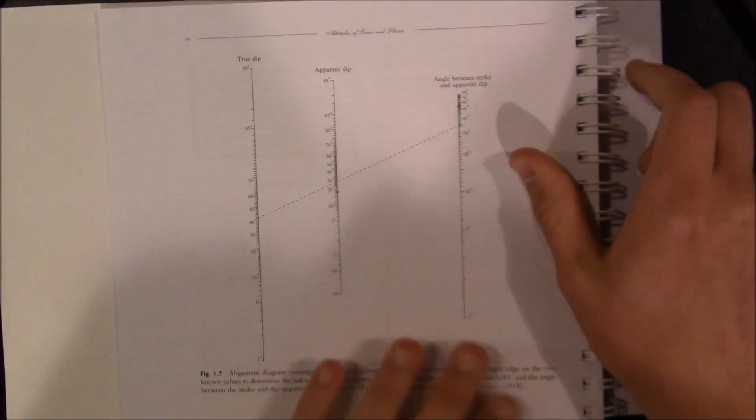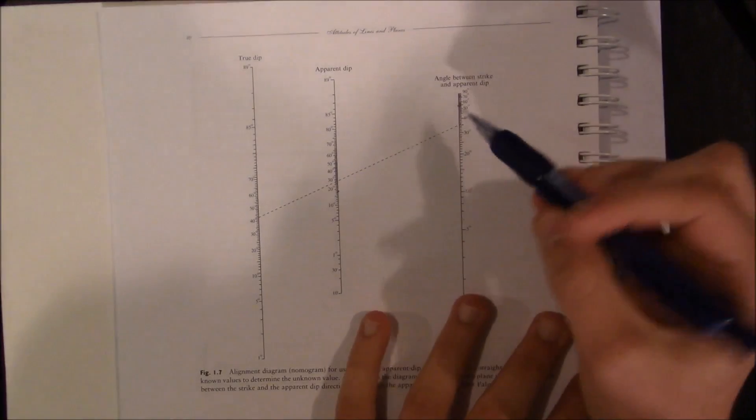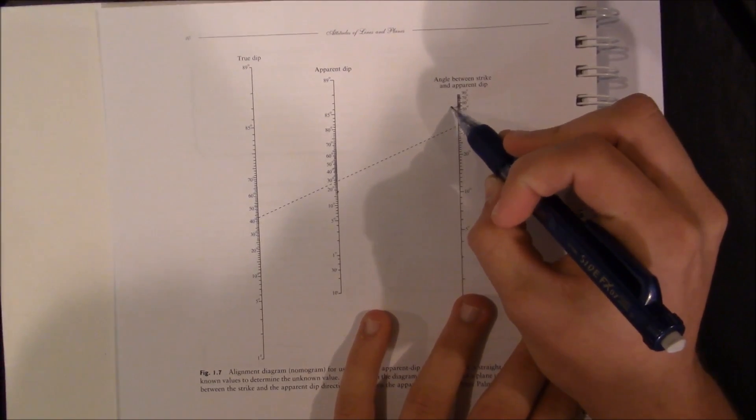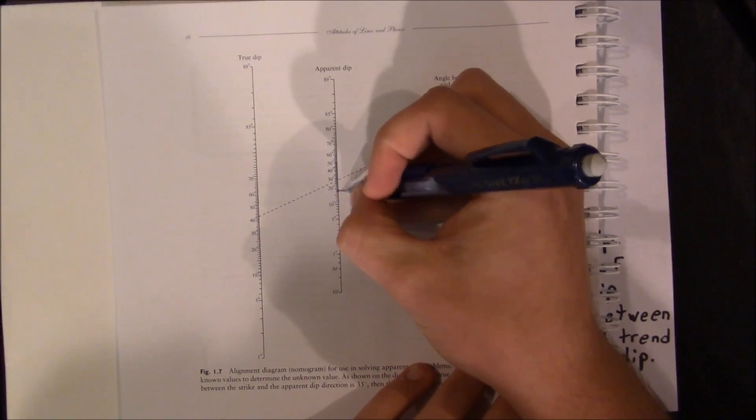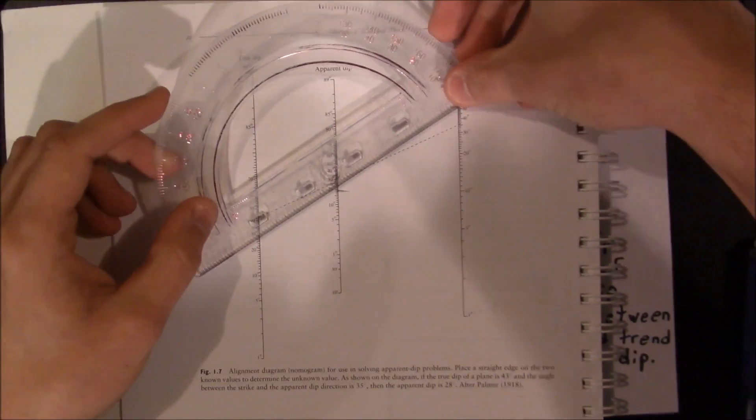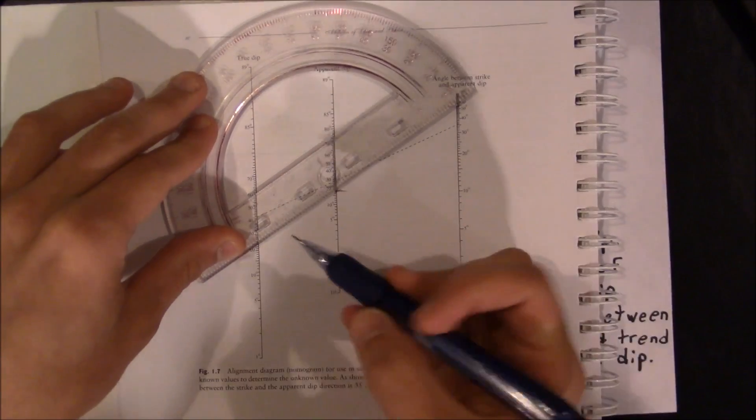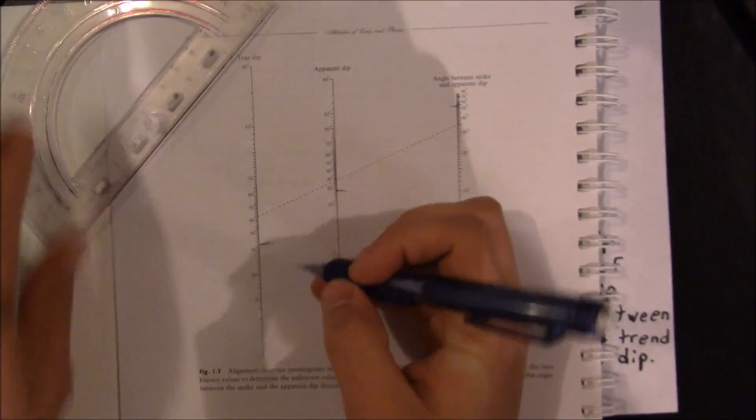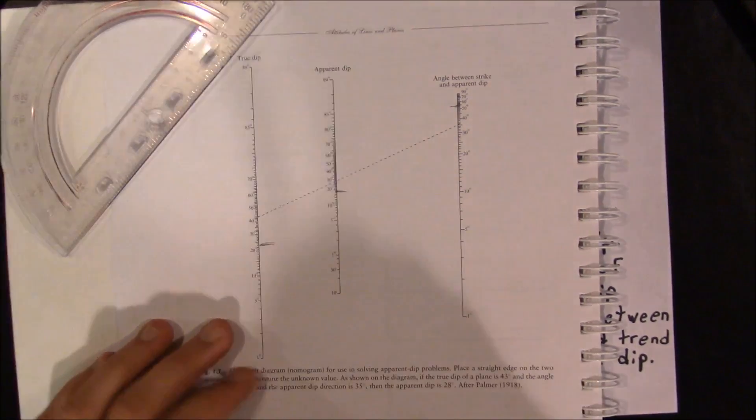So if I am to trace this out, I can find 53 degrees on here. Well, 53 degrees on this column over here, angle between the strike and the apparent dip. That's right about here. Then for the apparent dip, I know that this is about 19 degrees. That's right about here. And if I take my ruler and I match up these two dots, this will point me in the direction of the true dip, which is this value right here, which on this one comes out to be, let's see, looks about 23 degrees.